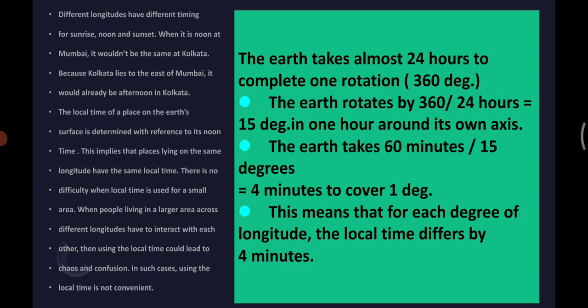So children, about local time, you have come to know that different longitudes have different timings for sunrise, noon and sunset. For each degree of longitude, the local time differs by 4 minutes. It is very important, children. The local time differs by 4 minutes for each degree of longitude.